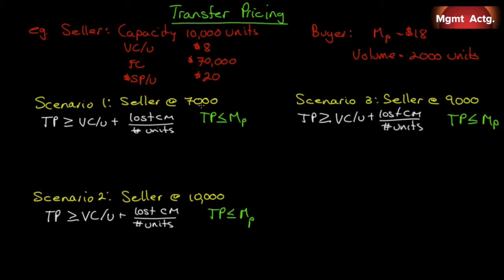In Scenario 1, the seller is selling 7,000 units right now and has capacity to produce 10,000, so can still sell another 3,000 but doesn't have a customer for it. Here's a customer for 2,000 right away. The transfer price must be greater than variable cost: $8 plus lost contribution margin on sales given up to fill the 2,000-unit order. We don't give up any outside sales, so it's zero divided by 2,000, which equals $8.